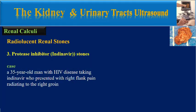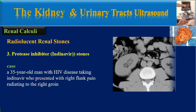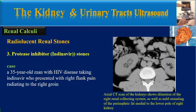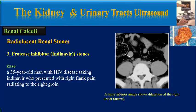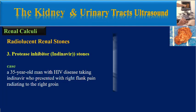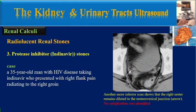This is one example. A 35-year-old man with HIV disease taking indinavir presented with right flank pain radiating to the right groin. A non-enhanced CT shows dilatation of the renal collecting system as well as mild stranding of the perinephric fat medial to the lower pole of the right kidney. A more inferior image shows dilatation of the right ureter.